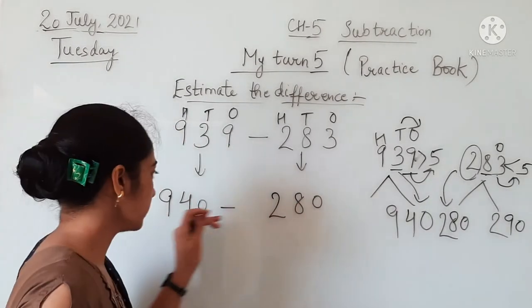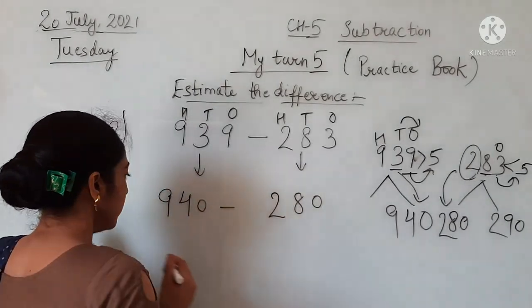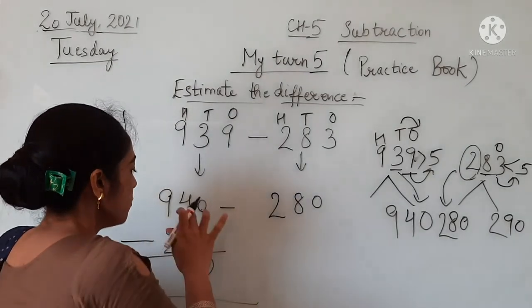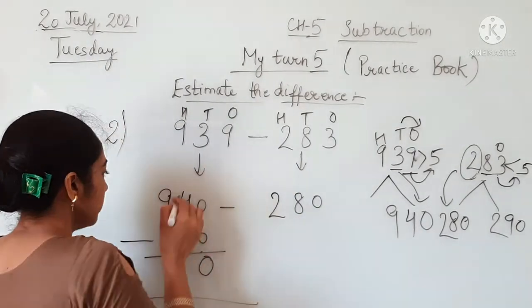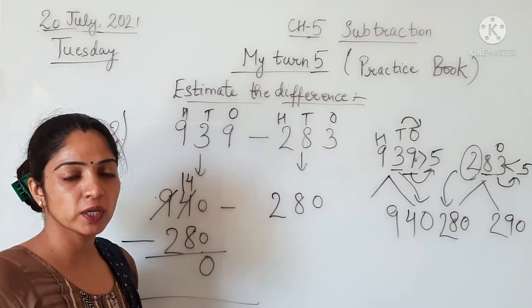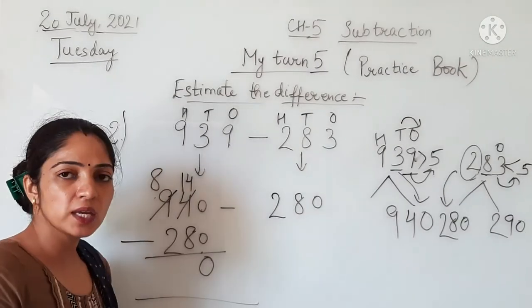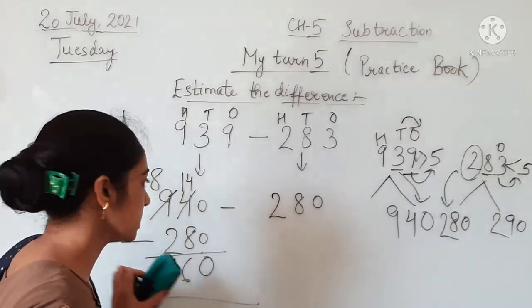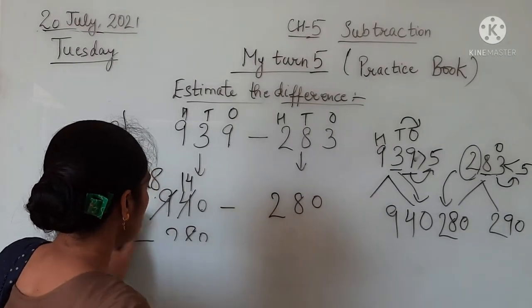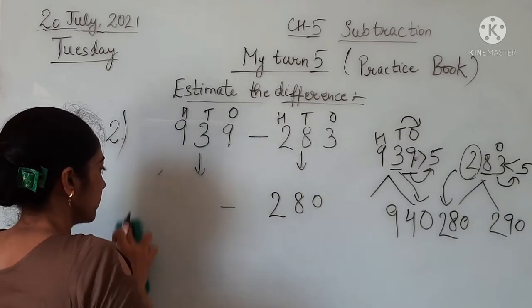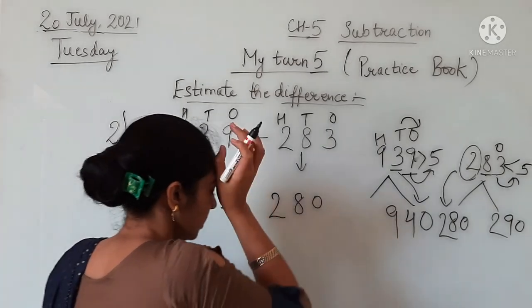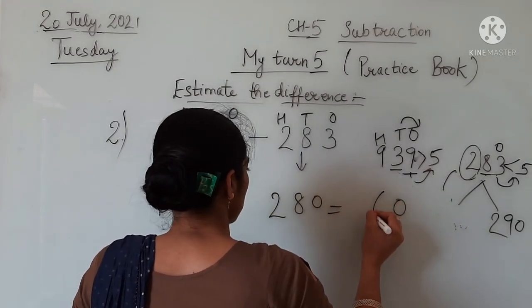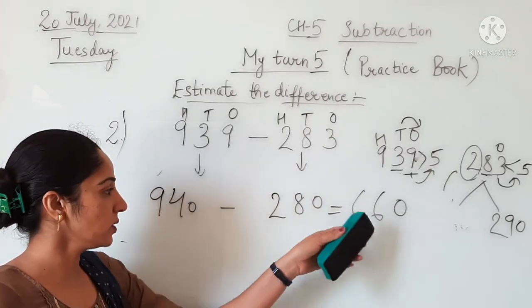Now we subtract these rounded numbers: 940 minus 280. 0 minus 0 is 0. 4 minus 8 - we can't subtract 8 from 4, so we borrow, carry from this 9. This 4 becomes 14 and this 9 becomes 8. 14 minus 8 is equal to 6. 8 minus 2 is equal to 6. So 660 is the answer which we get after subtracting these two numbers. 940 minus 280 is equal to 660. 660 is the required answer.